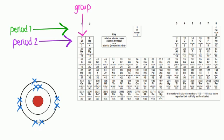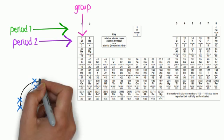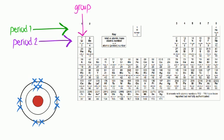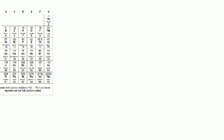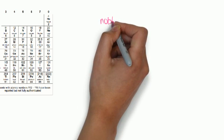Fluorine is in group 7, and has 9 electrons: 2 in the first shell, 7 in the outer shell. Neon is in group 0, it's a noble gas, and has 10 electrons: 2 in the first shell, and 8 in the outer shell.